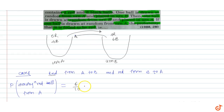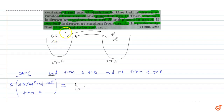The probability of drawing a red ball: there are 6 red balls out of 10 total balls in Urn A, so the probability is 6 by 10. We then consider Urn B and Urn A for the respective transfer steps.